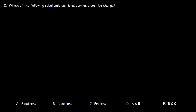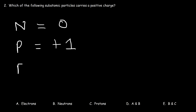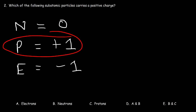Number two: which of the following subatomic particles carries a positive charge — the electrons, the neutrons, or the protons? Neutrons are electrically neutral — think of 'n' for neutral. Protons carry a positive charge — think of 'p' for positive. Electrons carry a negative charge. So the answer is the protons — C is the right answer.